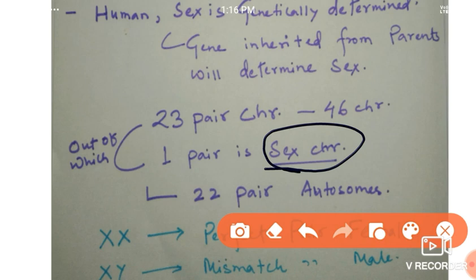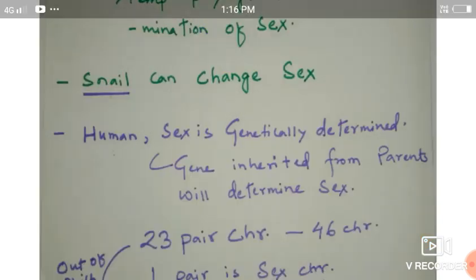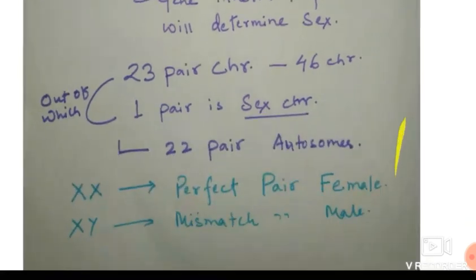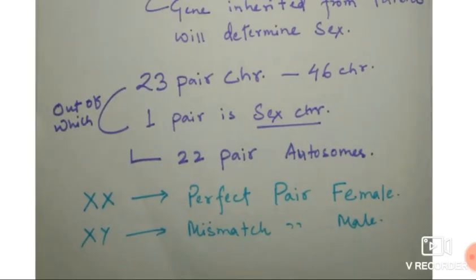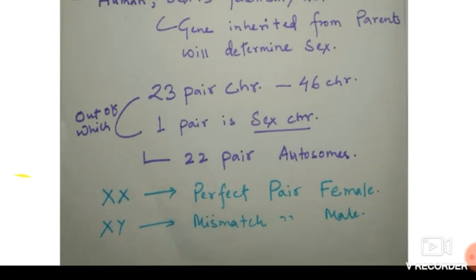The sex chromosome consists of two types. For male, it is XY — one X allele and one Y allele. This XY pair is not perfectly matched, so it is a mismatched pair for males. In the case of female, it is XX — both X alleles — so it is a perfectly matched pair. This is the nomenclature for male and female sex chromosomes.